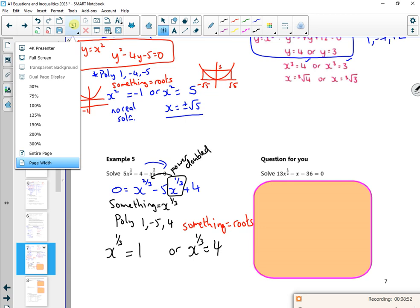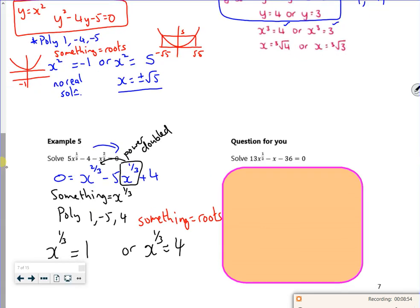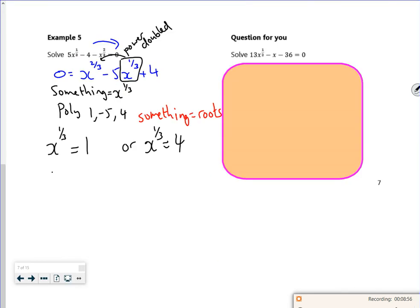To get rid of power of a third, I want a cube rooting. Sorry, because it's a cube rooting. So I've got x is 1 cubed. And x is 4 cubed. I don't know what I'm saying. They might have done so much differently here.